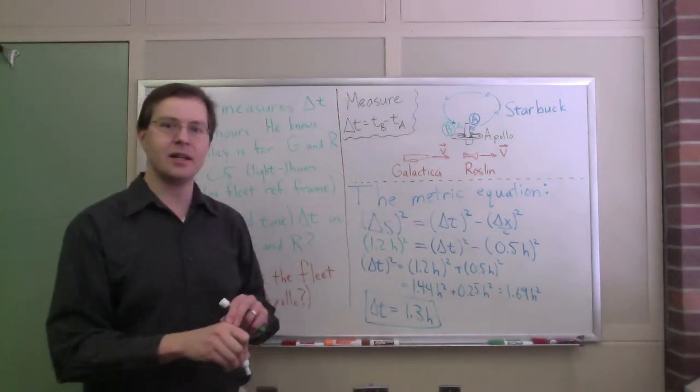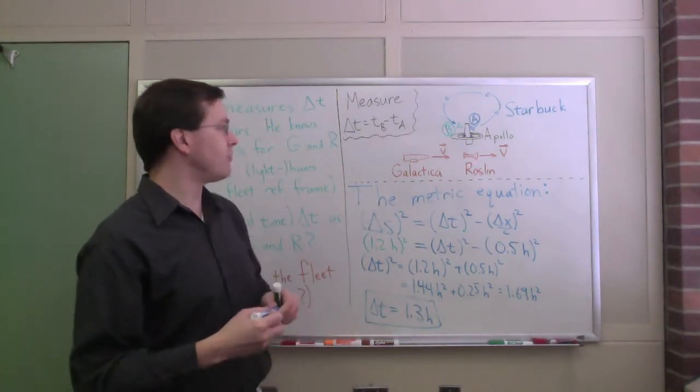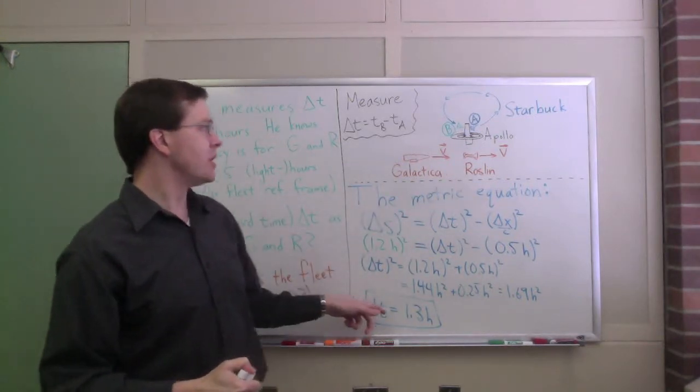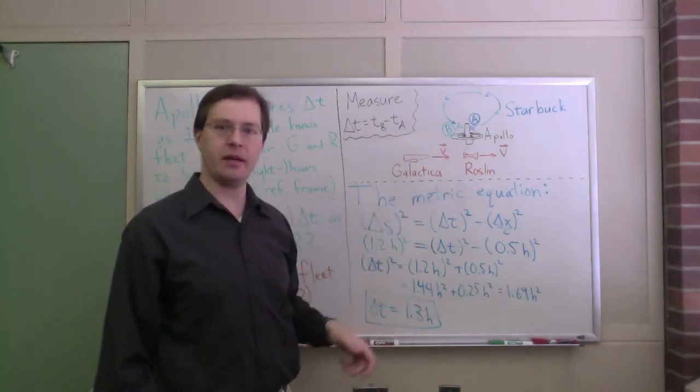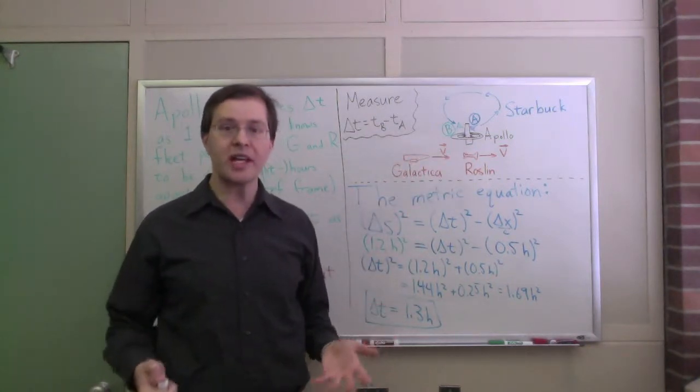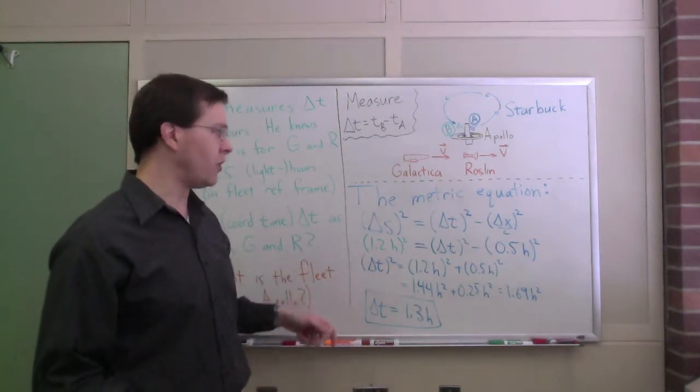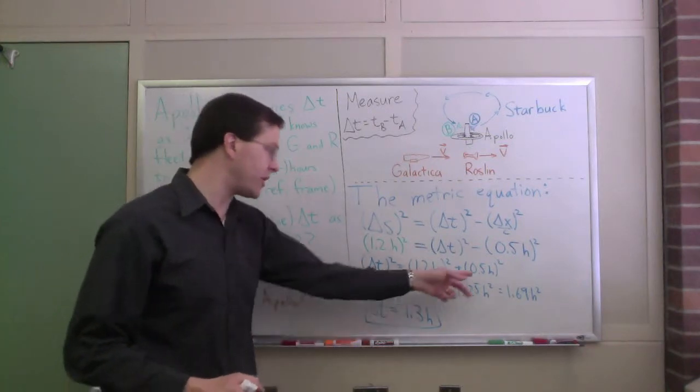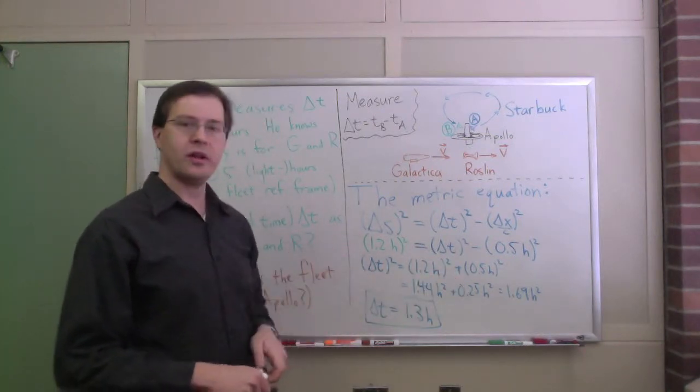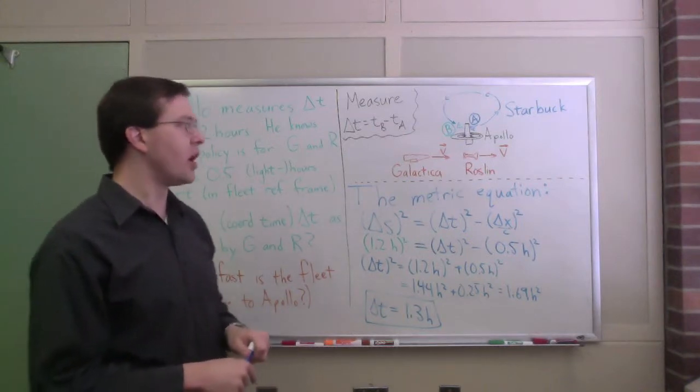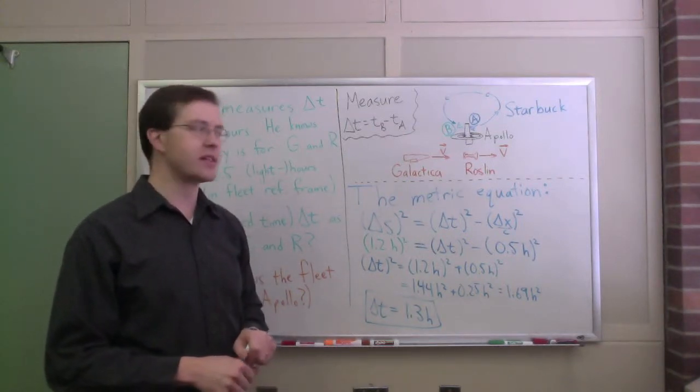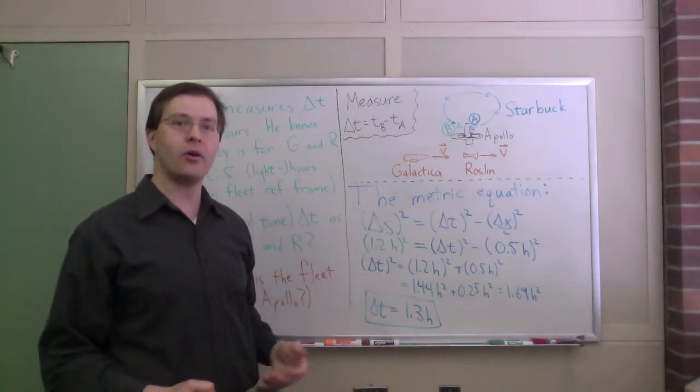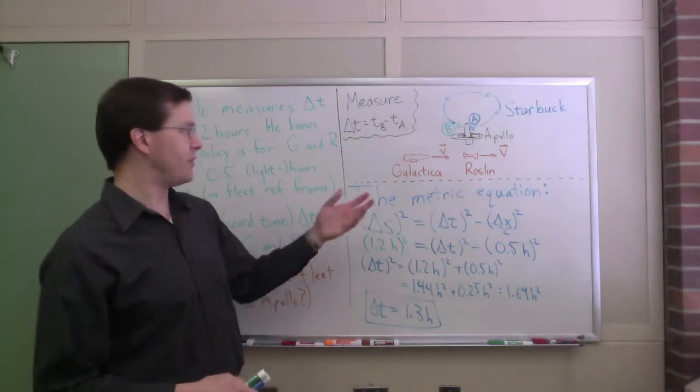So the claim here then is that in the fleet's reference frame, they would measure a time of 1.3 hours occurring between event A and event B. The fleet will measure that, and we can conclude that directly from the space-time interval that we get out of the metric equation just by solving for the delta t if we know the delta x and we know these other things. We can see that the fleet will measure a longer time for these two events than Apollo will. And that's perfectly fine. Different reference frames are allowed to come up with different measurements of distance.